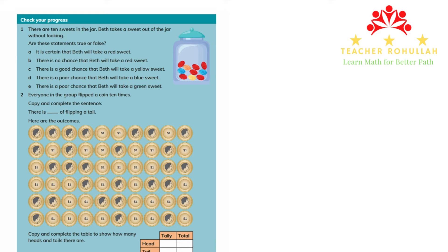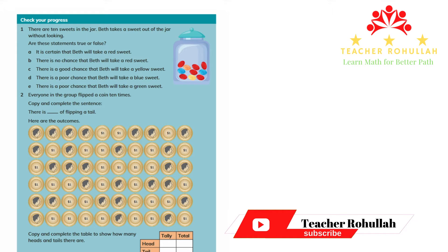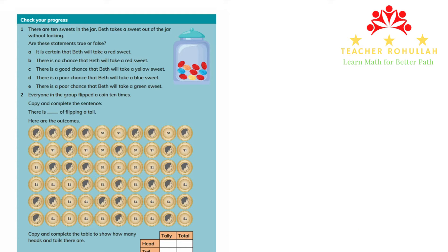Hello and welcome to today's lesson. In this lesson, I'm going to work on the last part of Unit 4 of Cambridge Primary Mathematics Learner's Book 4. This unit is about probability. Probability is showing how likely something is to happen. We use probability when we are not sure about the possible outcome.